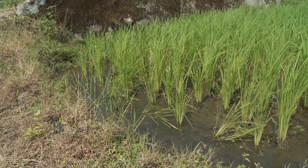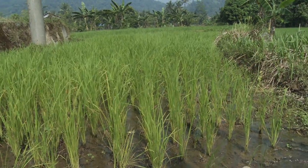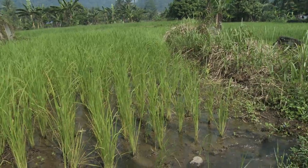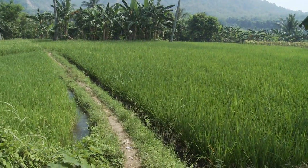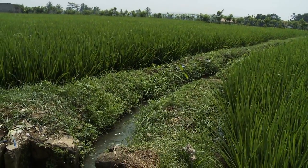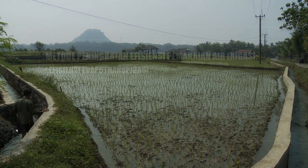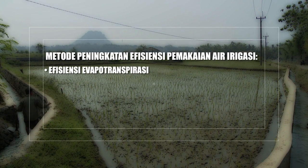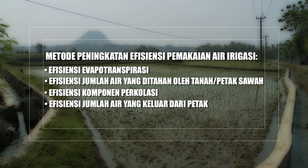Metode konservasi air dengan cara meningkatkan efisiensi pemakaian air irigasi dilakukan dengan cara mempengaruhi komponen-komponen pemakaian air. Komponen yang diusahakan efisiensinya yakni evapotranspirasi, jumlah air yang ditahan oleh tanah atau petak sawah, komponen perkolasi, dan jumlah air yang keluar atau bocor dari petak.